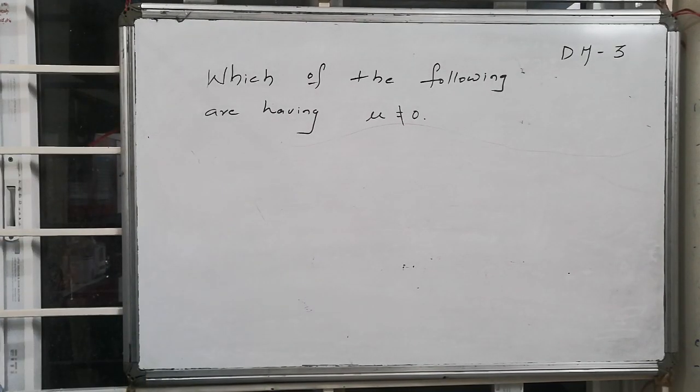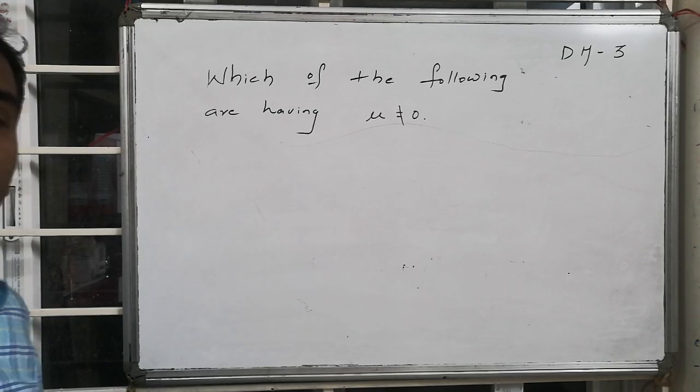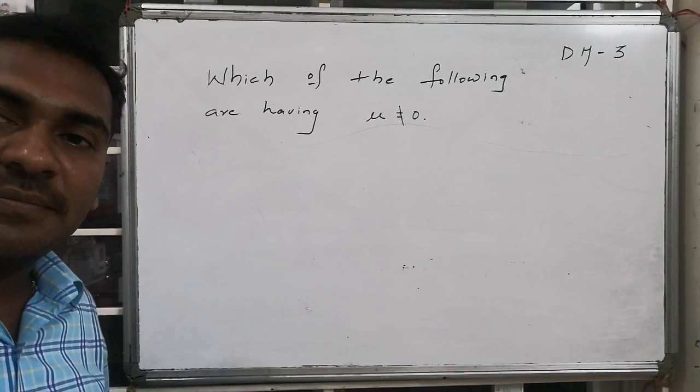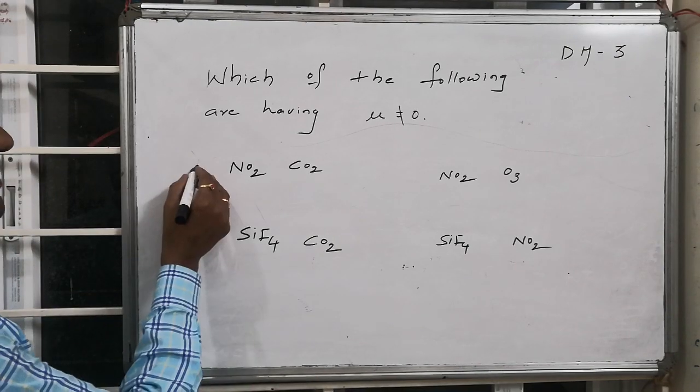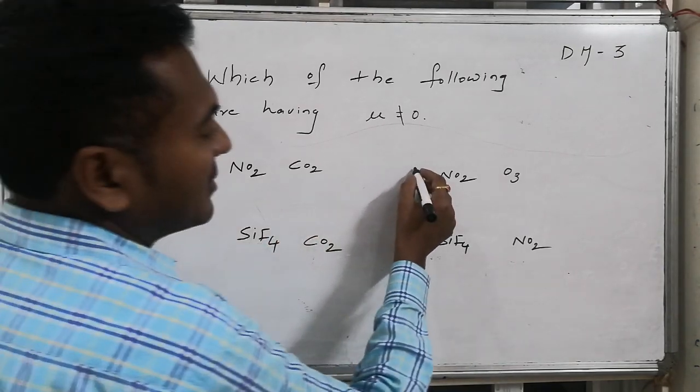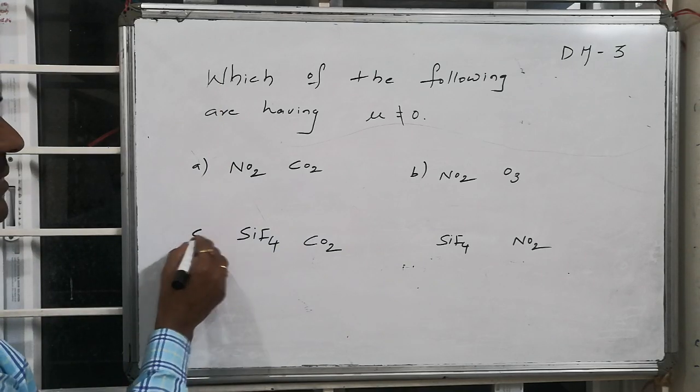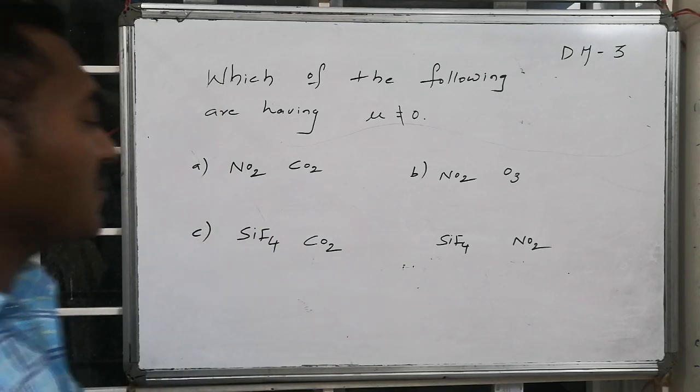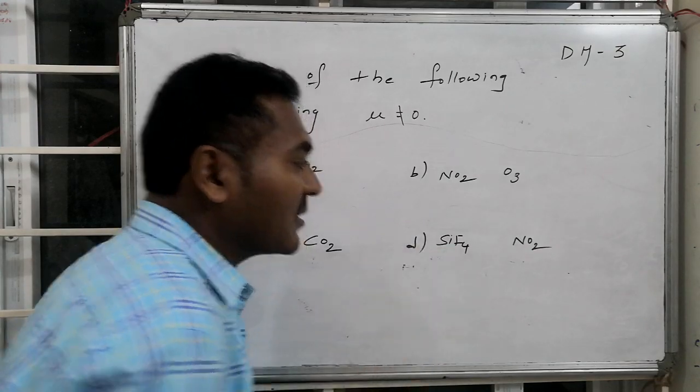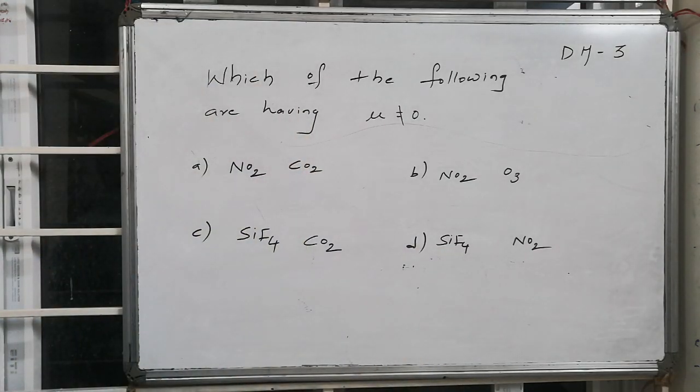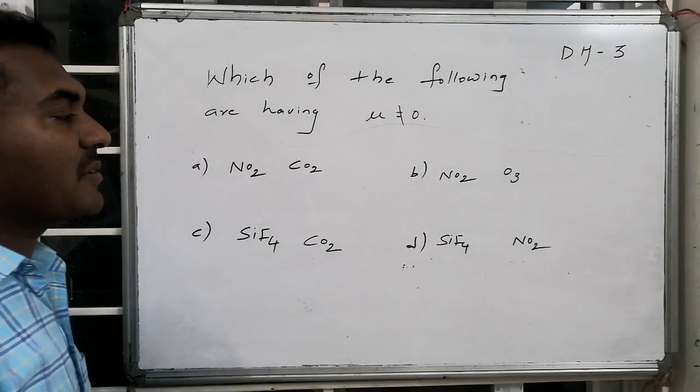Which of the following compounds are having μ not equal to zero, that is permanent dipole moment? The compounds given are: a) N₂, CO₂; b) NO₂, O₃; c) SiF₄, CO₂; and d) SiF₄, NO₂. In this, CO₂ is repeated for many options.